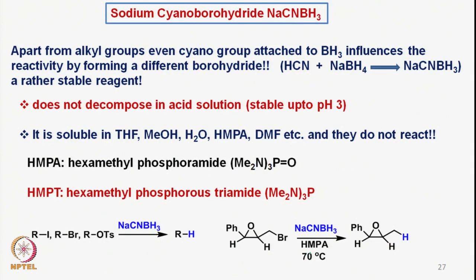We now move to another reducing agent: sodium cyanoborohydride. Not only alkyl groups — as seen with lithium triethylborohydride, selectride, or LS-selectride — but also an electron-withdrawing group such as a cyano group has been introduced and attached to the boron part of sodium borohydride. This is easily made by reacting sodium borohydride with hydrogen cyanide.